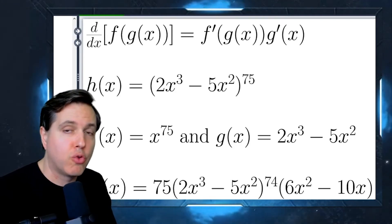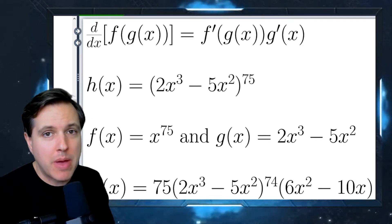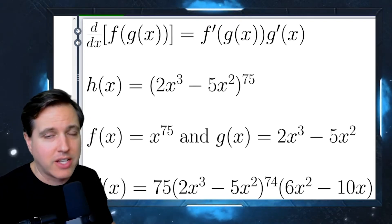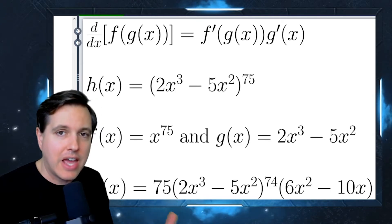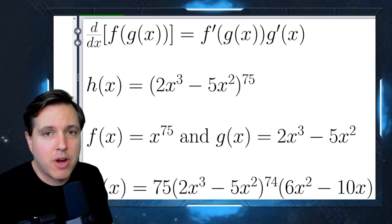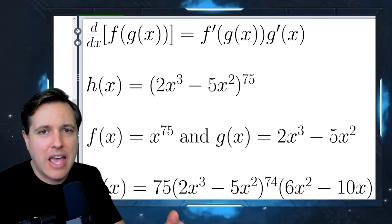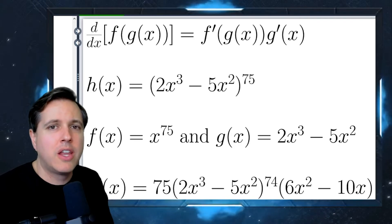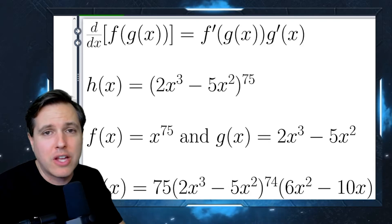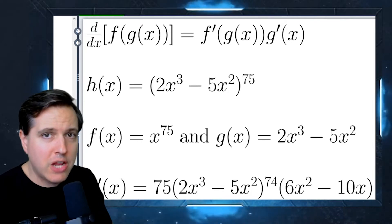Today we're checking out the chain rule. The hardest thing about the chain rule is remembering to do the chain rule. If you can remember to do it, you're probably going to be just fine. After you do a dozen of these you get it, but it's easy to forget to actually apply it. Sometimes if you're doing a problem and it looks mostly right but there's extra stuff, the answer may be that you just stopped short — you forgot to apply the chain rule.